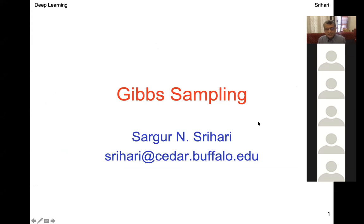This is the special case of Gibbs sampling. We just learned about MCMC as a way of generating samples by changing the proposal distribution as we move along, and we need a way of changing the distribution. Gibbs tells you how to do that.